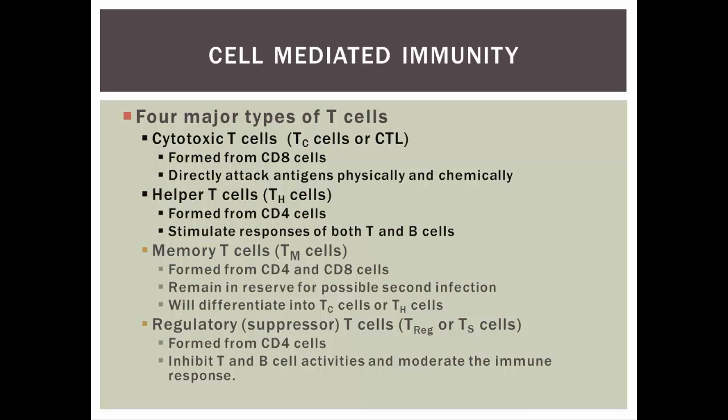The helper T-cell is formed from CD4 cells. When activated, it will stimulate both B-cells and T-cells, so it kind of runs the show — it's the general of our army. It's absolutely essential because it's the only way we can get cytotoxic T-cells and B-cells activated. Then there are memory T-cells, which come from either CD4 or CD8 cells. They remain in reserve for a possible second infection, and if we get infected by the same pathogen again, they can mount a very quick response and differentiate into cytotoxic T-cells or helper T-cells to get rid of that pathogen very quickly.